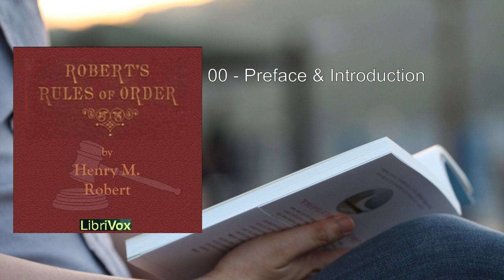This is a LibriVox recording. All LibriVox recordings are in the public domain. For more information or to volunteer, please visit LibriVox.org. Robert's Rules of Order: Pocket Manual of Rules of Order for Deliberative Assemblies by Henry M. Robert.